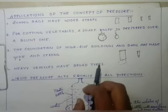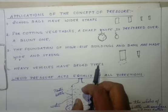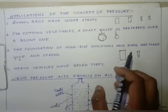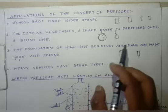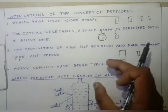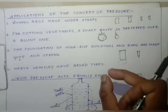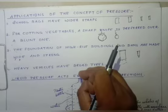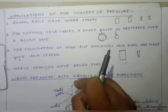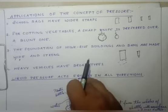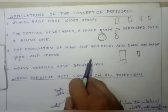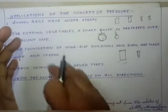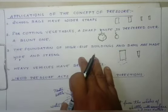Heavy vehicles have broad tires so that less pressure is put on the ground, and they can move even on soft roads and fields without sinking. If the tires are very thin, they create more pressure on the ground and there is a chance of sinking. That is why heavy vehicles have broader tires so that the pressure is distributed all throughout the ground.